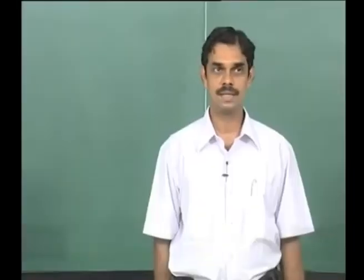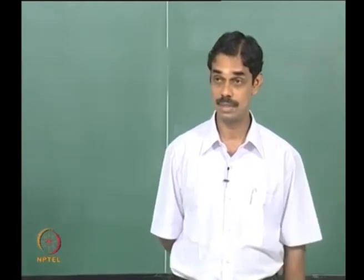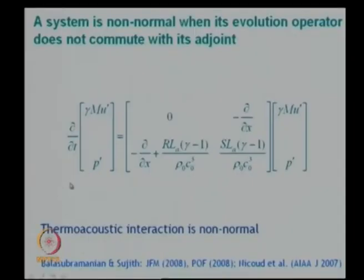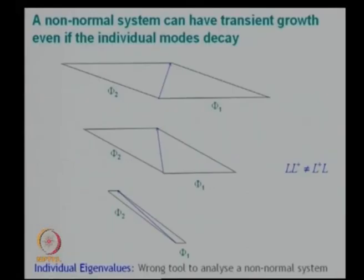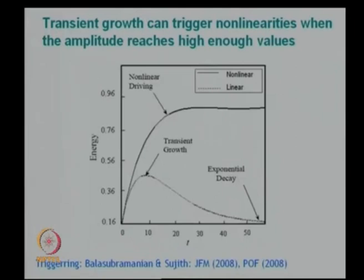Good morning everybody. Last class we looked at the non-normality of thermo-acoustic systems. We found that the operator is non-normal, which results in non-orthogonal eigenmodes. We saw that if you have a system where the eigenmodes are decaying, even as they decay you can end up having growth in the short term — this is called transient growth. We are now going to look at the Rijke tube model.